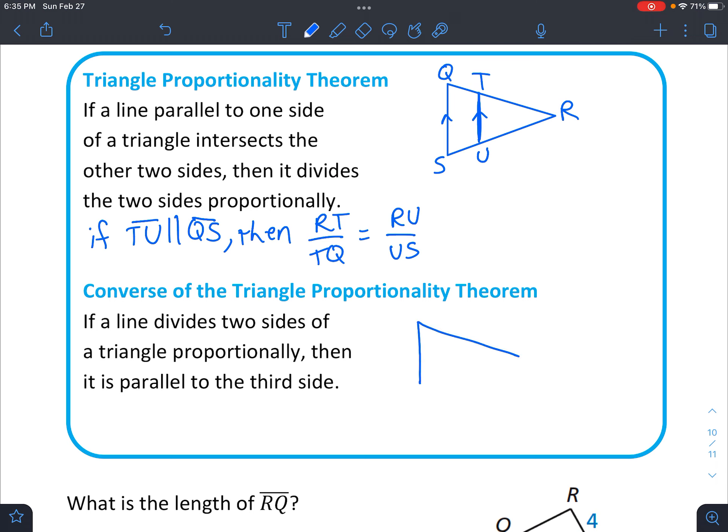Okay, then the converse of that, sort of like the opposite of that. Let's draw one more triangle. I'll just go ahead and use the same letters, SQ, and draw another line that is parallel. TU, R. Okay,